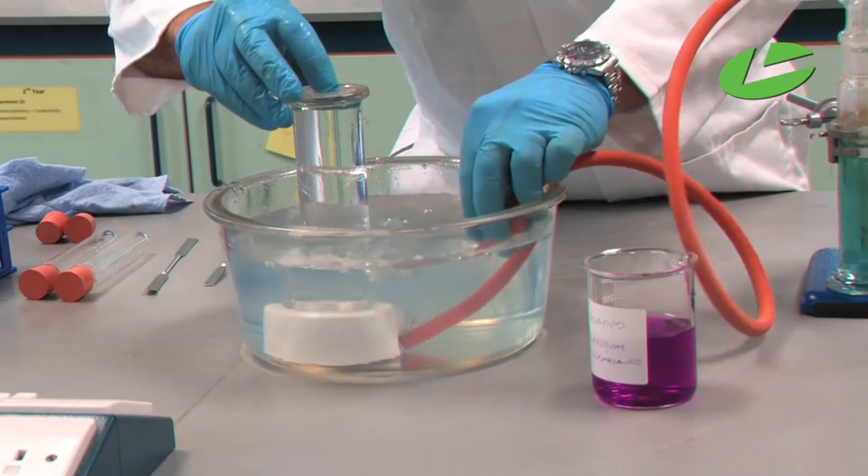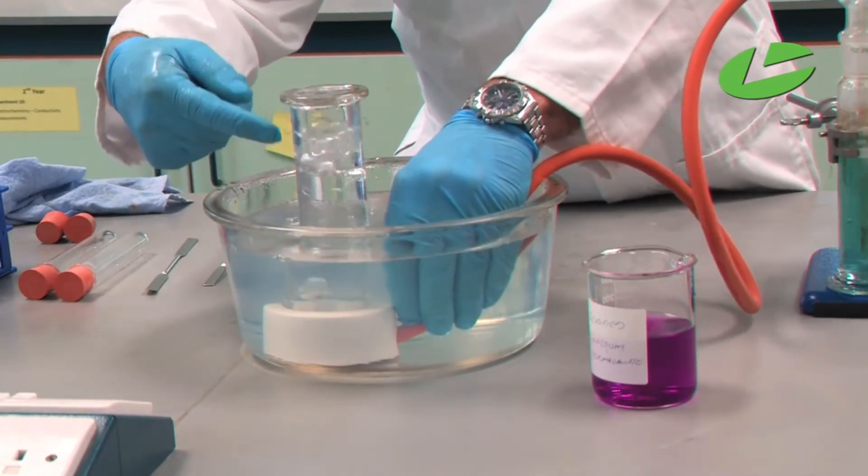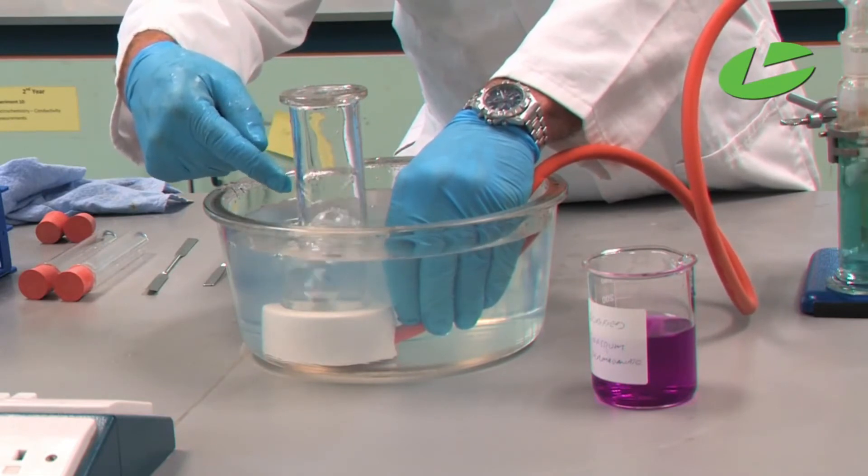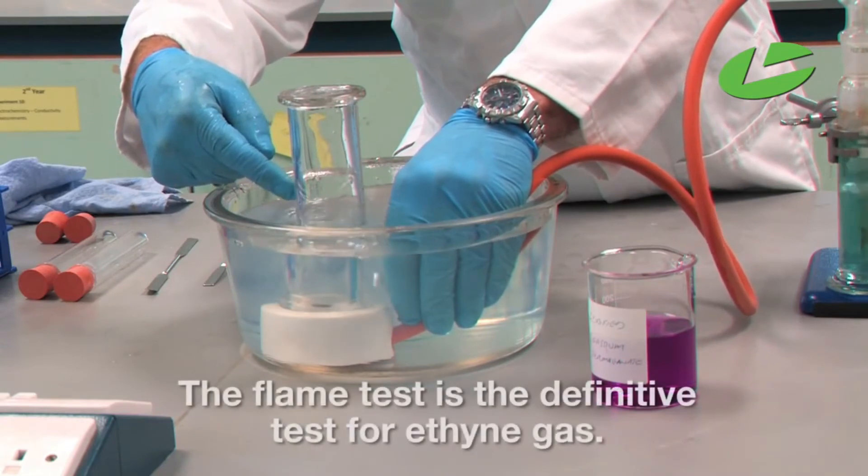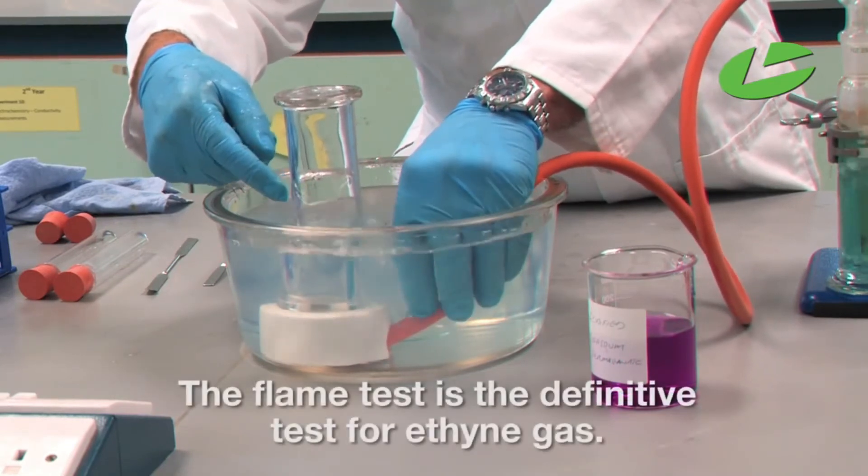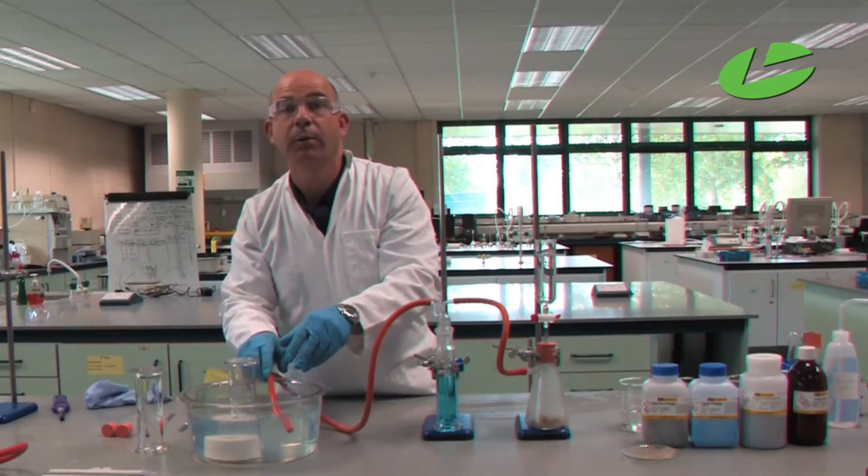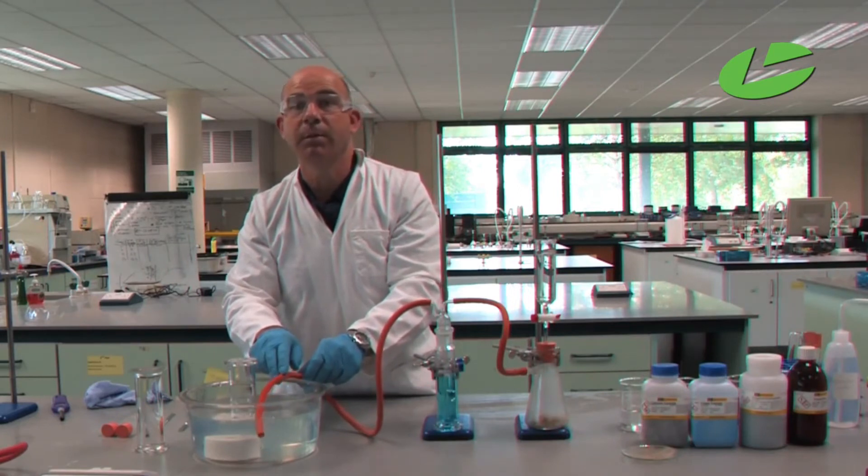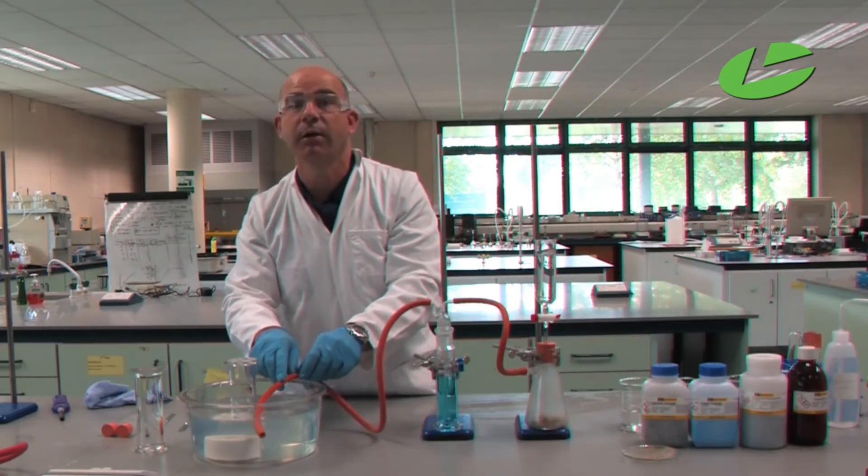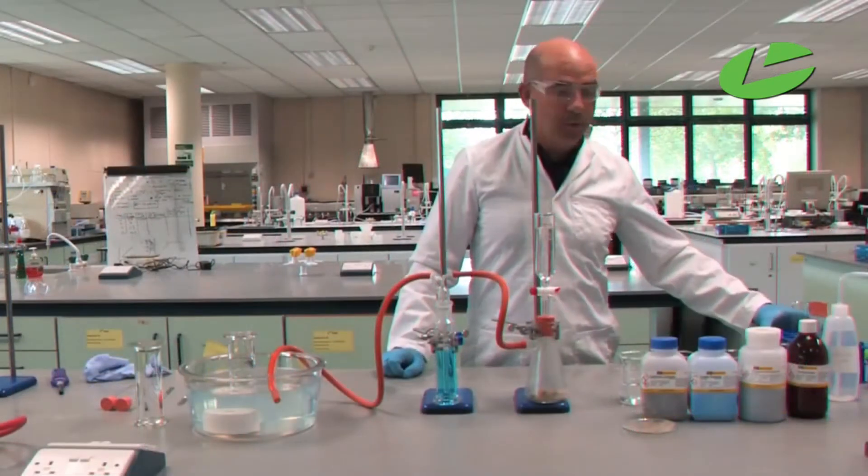Now that the displaced air is gone, collect the ethyne gas for the flame test. Place the tube into the beehive and watch the bubbles come up, displacing the water downwards. Once the glass jar is full of ethyne gas, we can do the flame test, which is the definitive test to see whether we've got ethyne present. Before the flame test, I'm going to demonstrate the check to see whether we've got an unsaturated compound. This checks for unsaturation, not specifically for ethyne - the flame test is for ethyne.